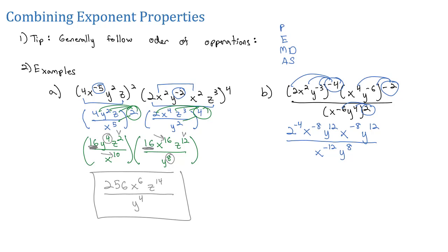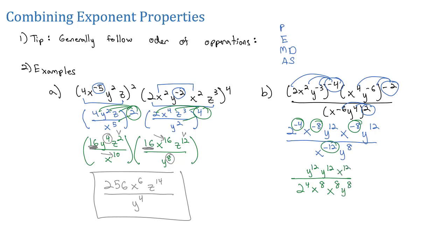Now that there are no more parentheses, let's move those negative exponents around and fix them. All negative exponents move to the opposite location. So 2 to the 4th moves to the bottom. The x to the 8th moves to the bottom. The y to the 12th stays. The x to the negative 8th moves to the bottom. The y to the 12th stays. x to the negative 12th moves up as x to the 12th on top. And y to the 8th stays on the bottom.